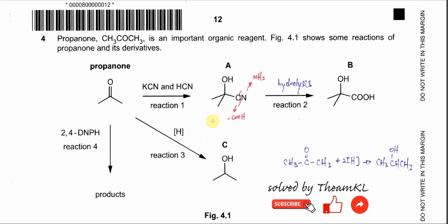Question 4 is about propanone's related reactions. In figure 4.1, propanone undergoes four reactions. The first reaction uses potassium cyanide and hydrogen cyanide, and we know that it will undergo nucleophilic addition.